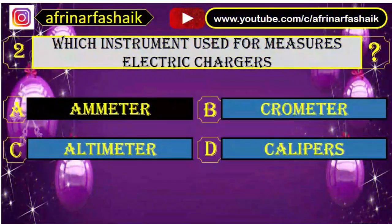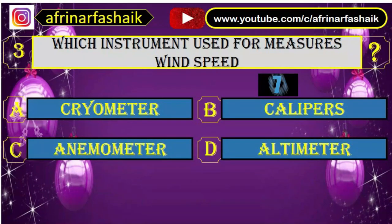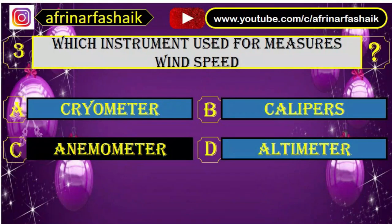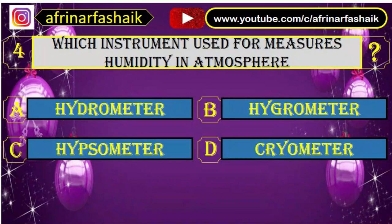A. Ammeter is the right answer. Question number three: which instrument is used to measure wind speed? Your options are A. Cryometer, B. Calipers, C. Anemometer, D. Altimeter. C. Anemometer is the right answer.